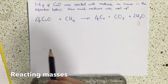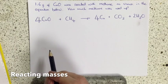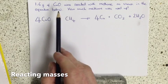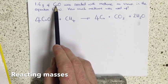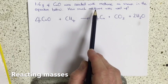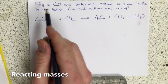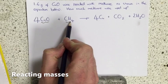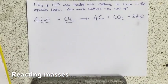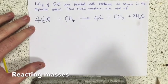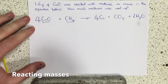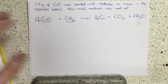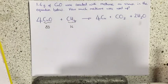OK, so the way we'd start this is we'd work out the MRs of each of the compounds that we're actually interested in. We're interested in the copper oxide and we want to know how much methane we used up, so we're interested in these two. Now if we work out the MRs by adding up the atomic masses, we get 80 and 16.